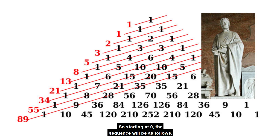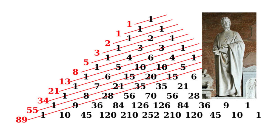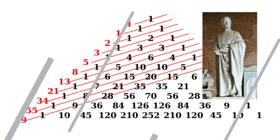So starting at zero, the sequence will be as follows: 0, 1, 1, 2, 3, 5, 8, 13, 21, 34, 55, 88, and 144.